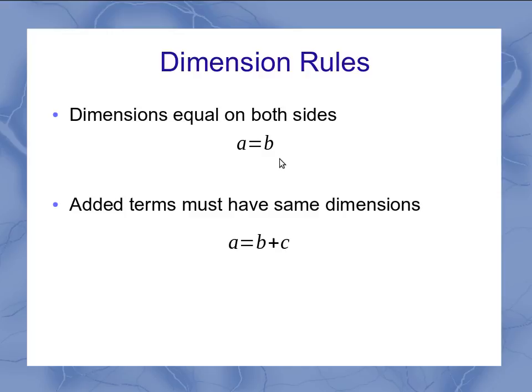The next rule is that when we've got an equation where two things are added in terms of two terms, B and C, they have to have the same dimensions. B has to have the same dimensions as C in order to be able to add them up.